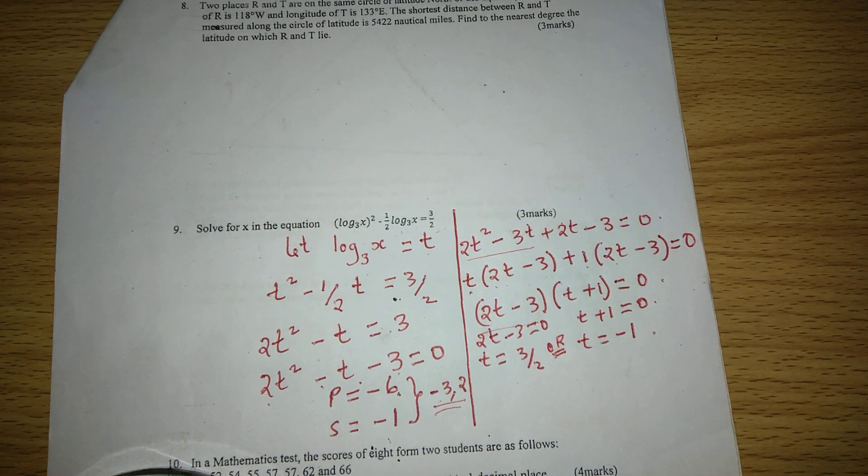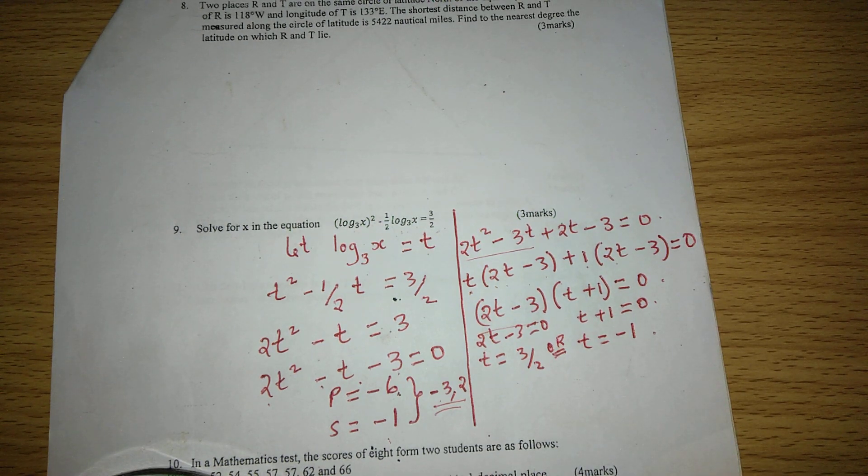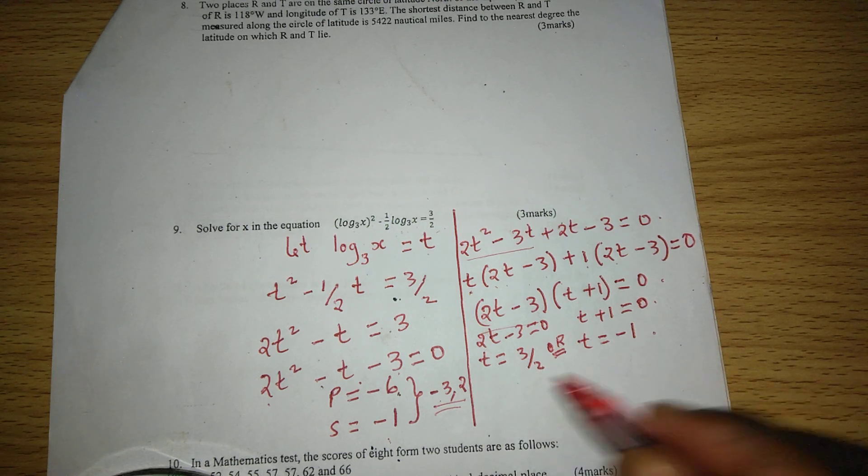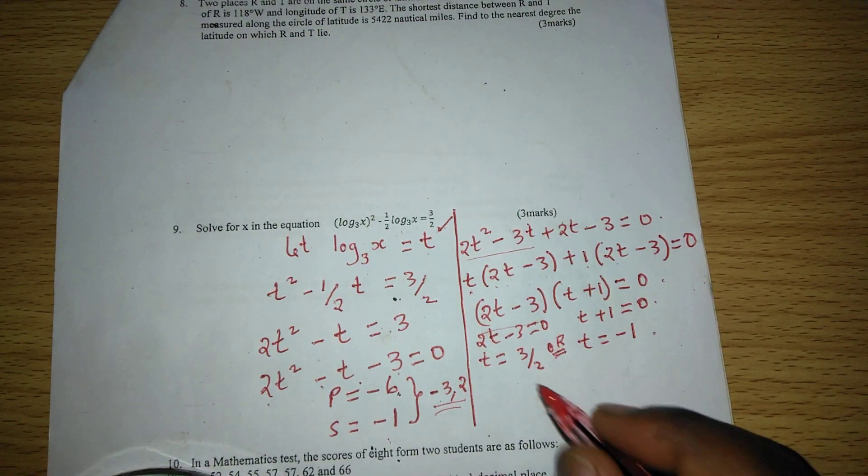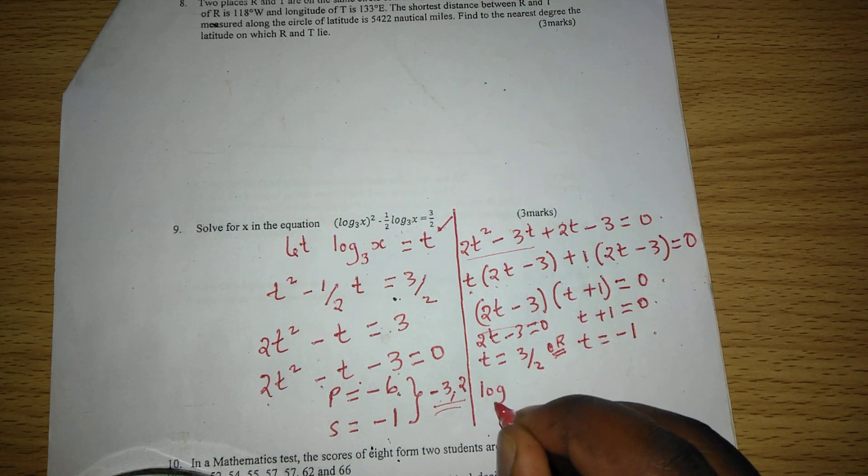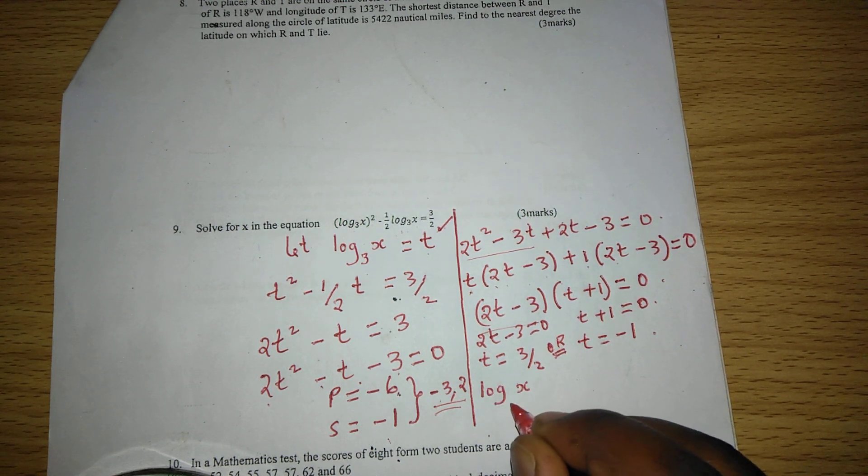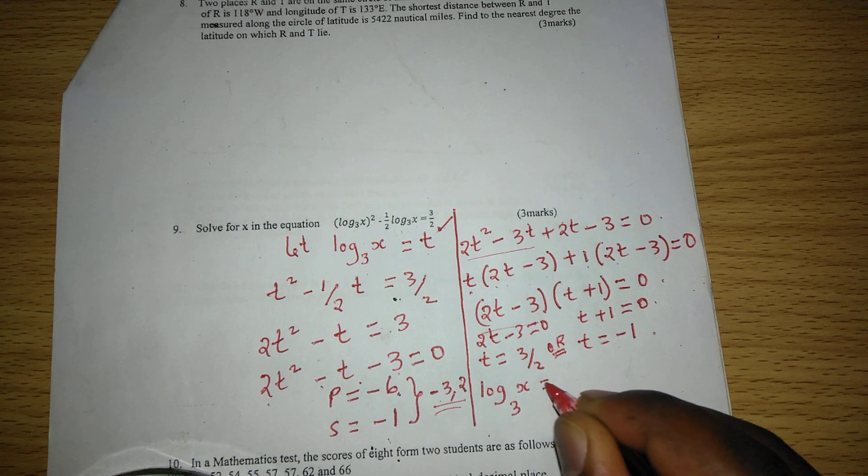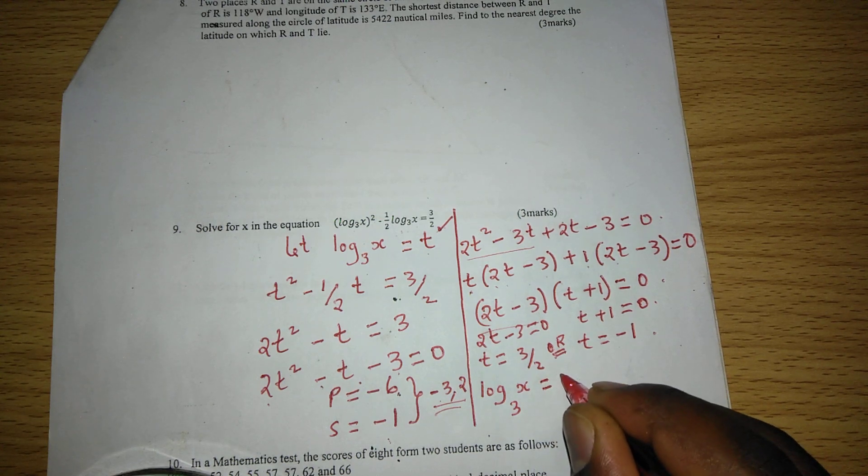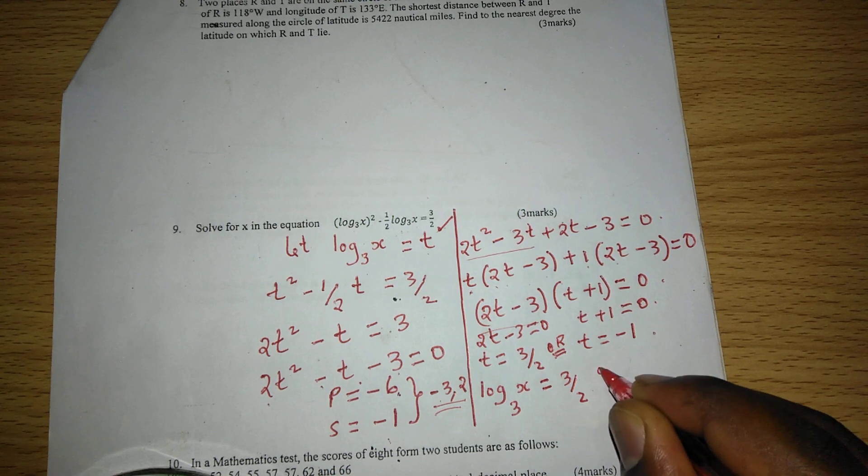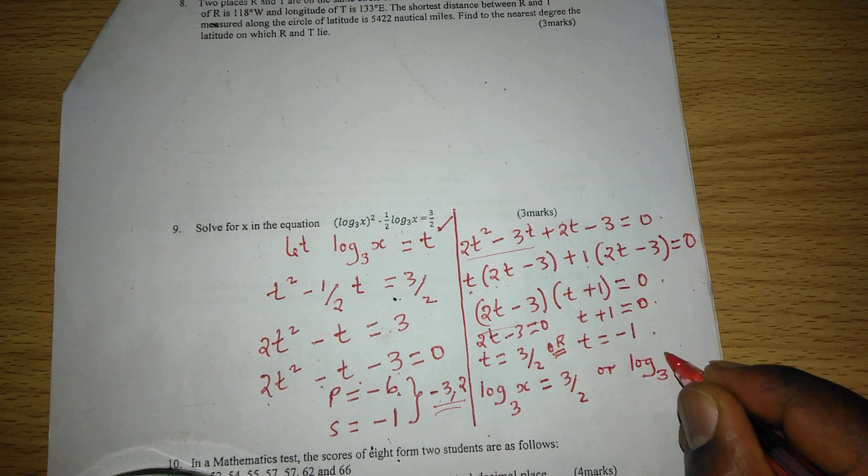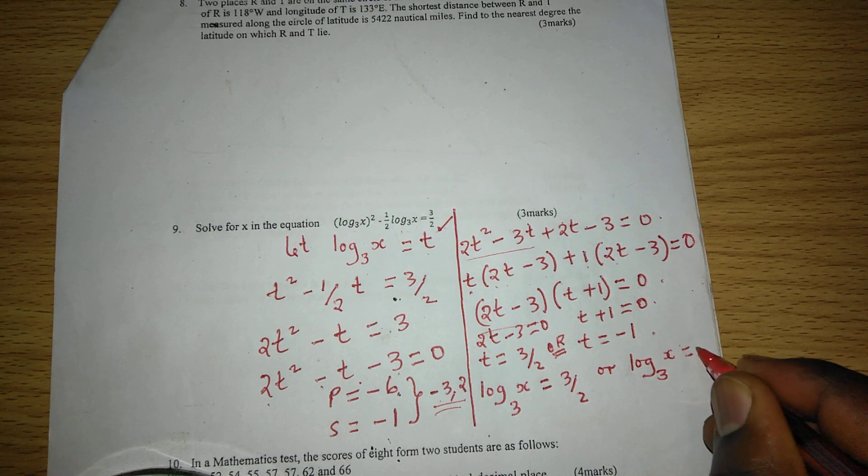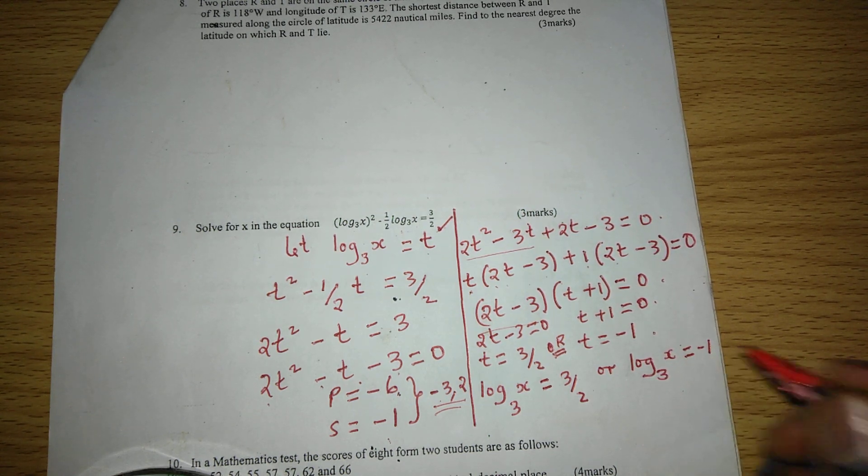We have two roots of t. Remember we had let t to be something, so we can now go back to our original equation and say that the logarithm of x to base 3 is equal to t, and we've gotten t as 3 out of 2, or the logarithm to base 3 of x equals negative 1, the other root of t.